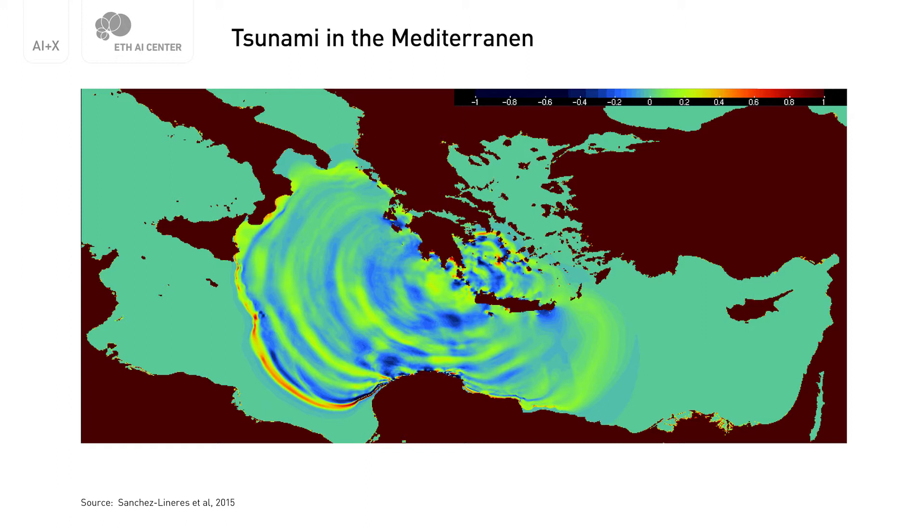And because there is an earthquake, the earth is raised up under the ocean. That leads to a little rise in the sea level. And once the sea level rises a little in the middle of the ocean, it generates a tsunami. The wave travels all over the Mediterranean.